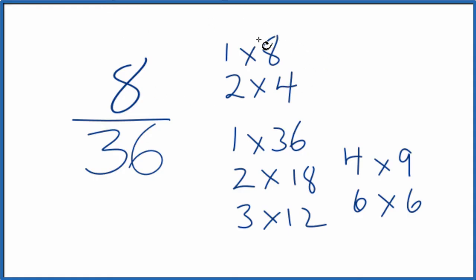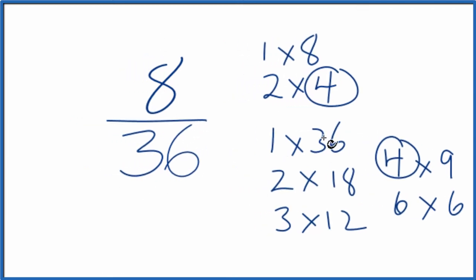And as I look at the factors for 8 and for 36, I see the greatest common factor is going to be 4. So we'll divide 8 by 4 and then 36 by 4, and we'll have simplified 8/36. Let's move these over here.